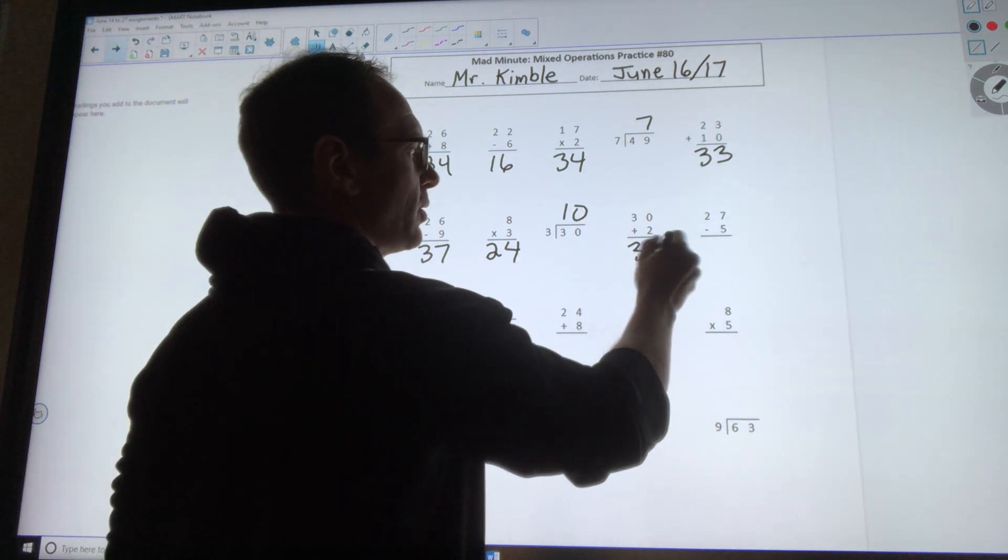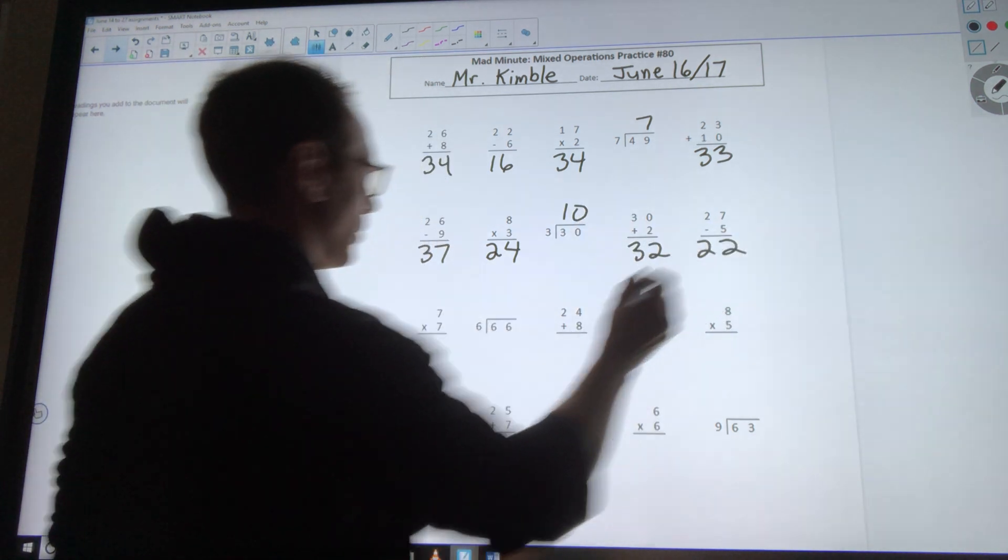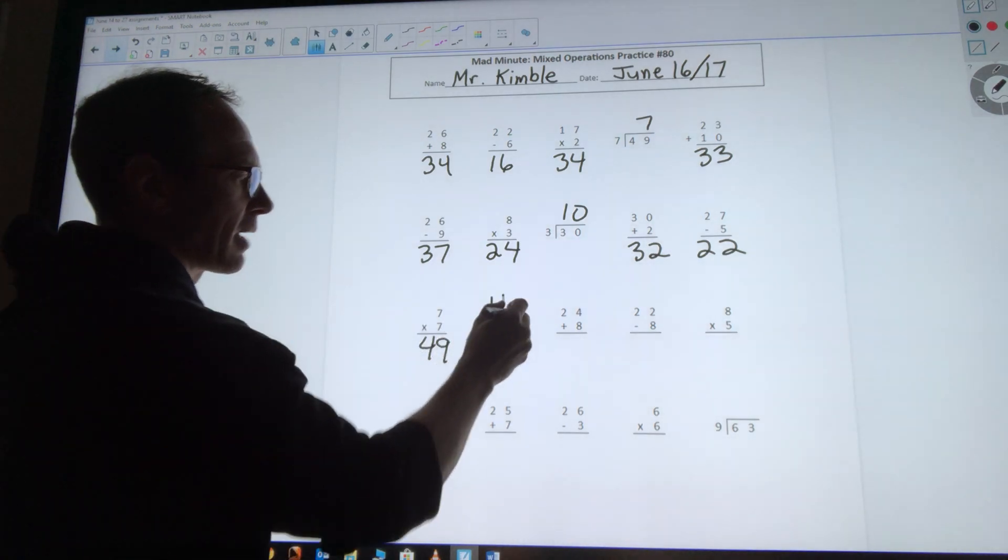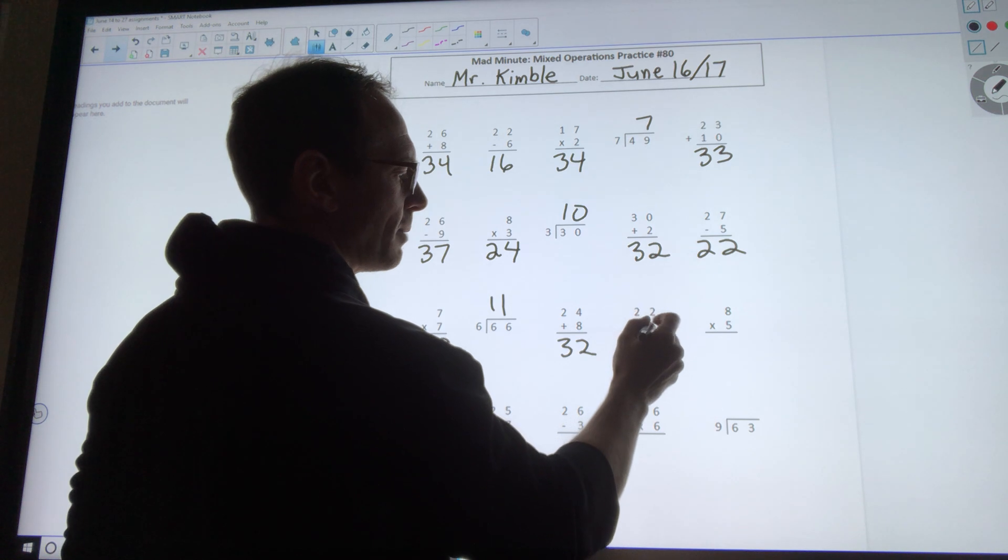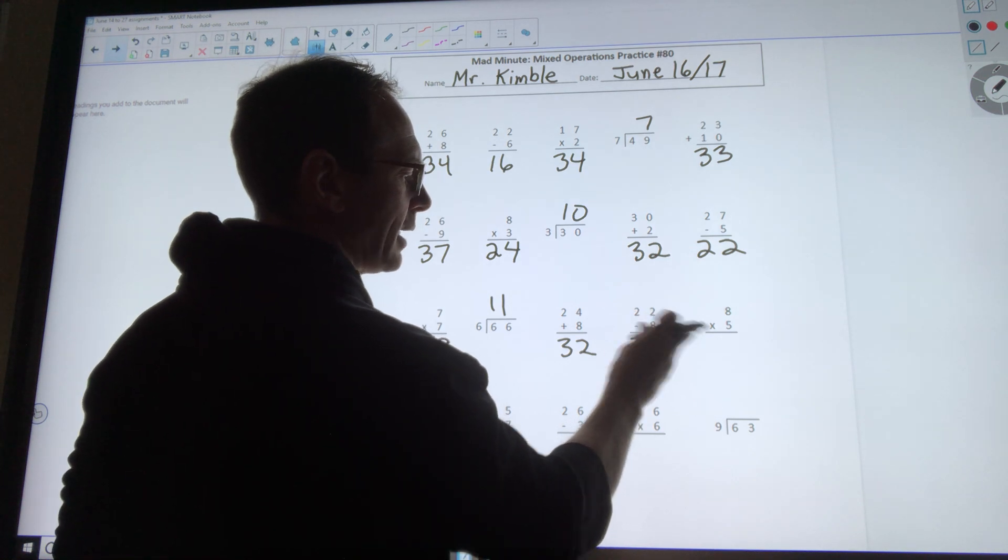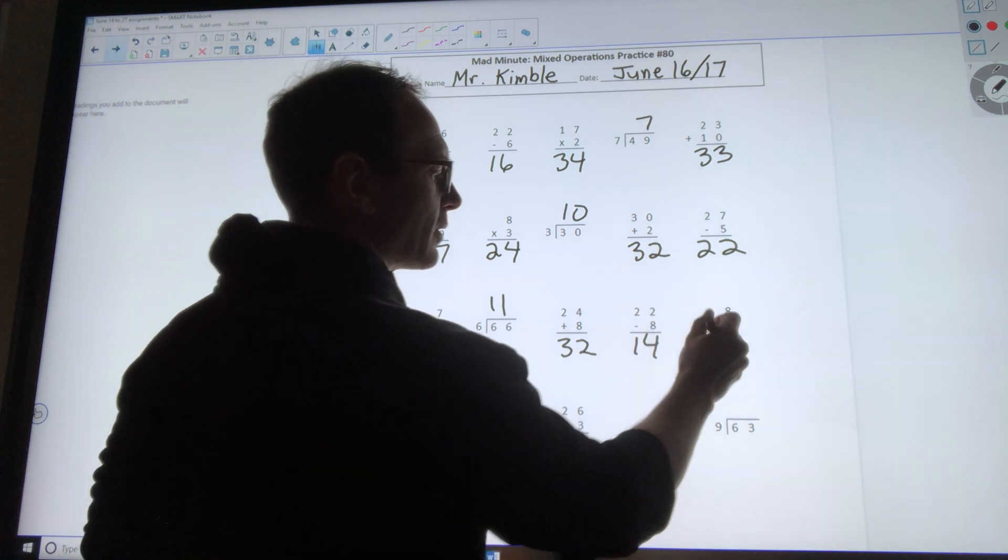30 plus 2 is 32. 27 minus 5 is 22. 7 times 7 is 49. 66 divided by 6 is 11. 24 plus 8 is 32. 22 minus 8 is 14. 8 times 5 is 40.